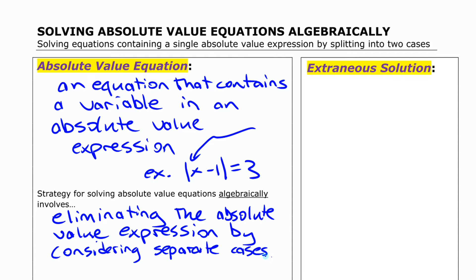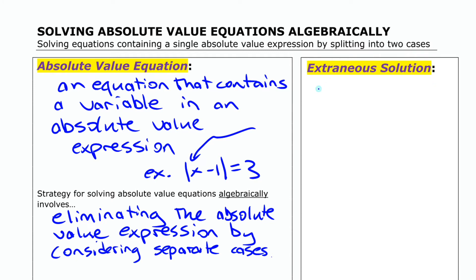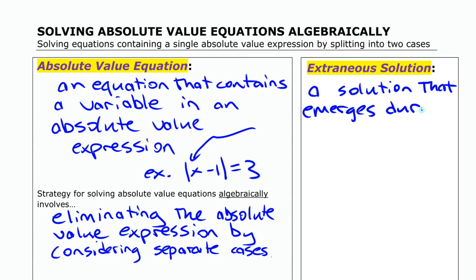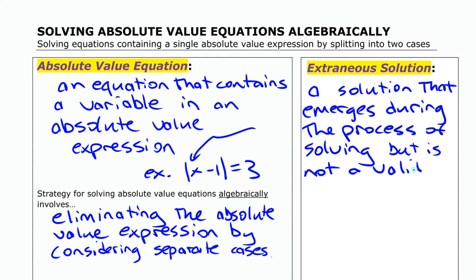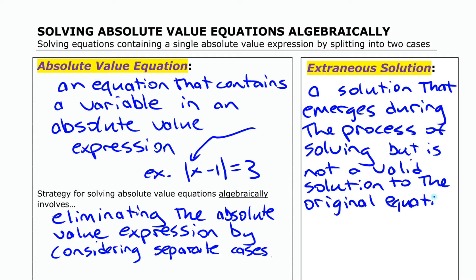We're going to see what that means in a minute. The other thing that we need to think about here is the idea of extraneous solutions. An extraneous solution is a solution that emerges during the process of solving but isn't a valid solution to the original equation and has to be rejected because of that.